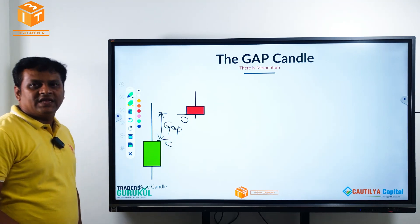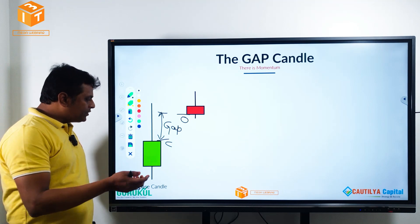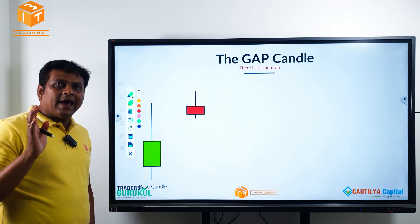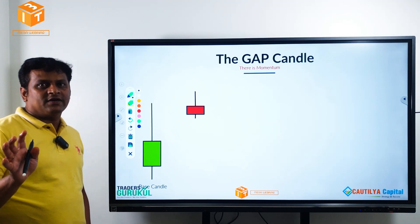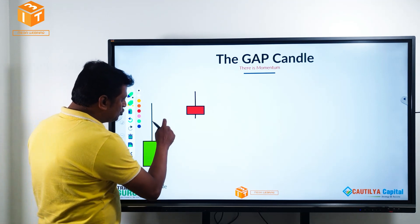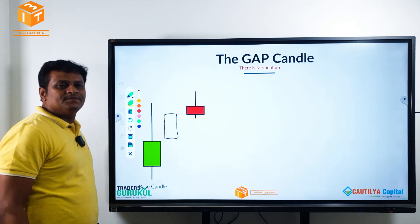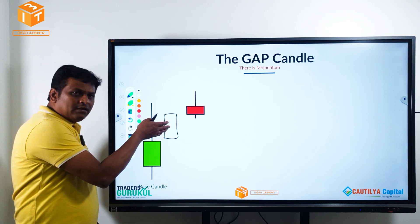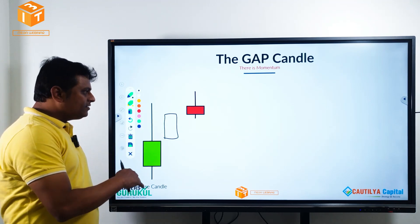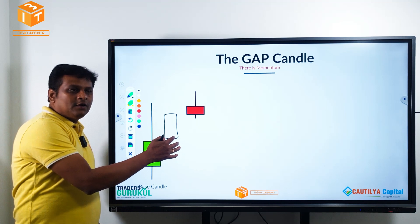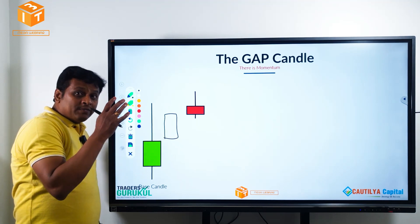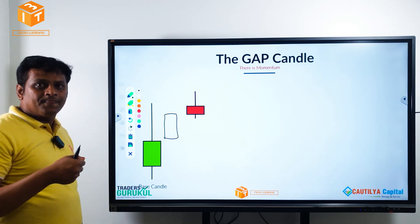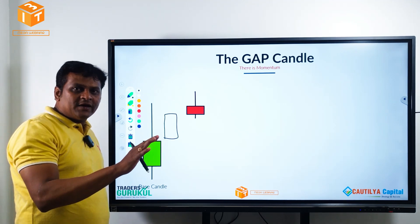In price action, we generally treat a gap candle as a momentum candle. What we do is assume there is one candle here — invisible, hidden — but it is a momentum candle. Why is it a momentum candle? Because the price went up due to extensive buying, extensive pressure from buyers.